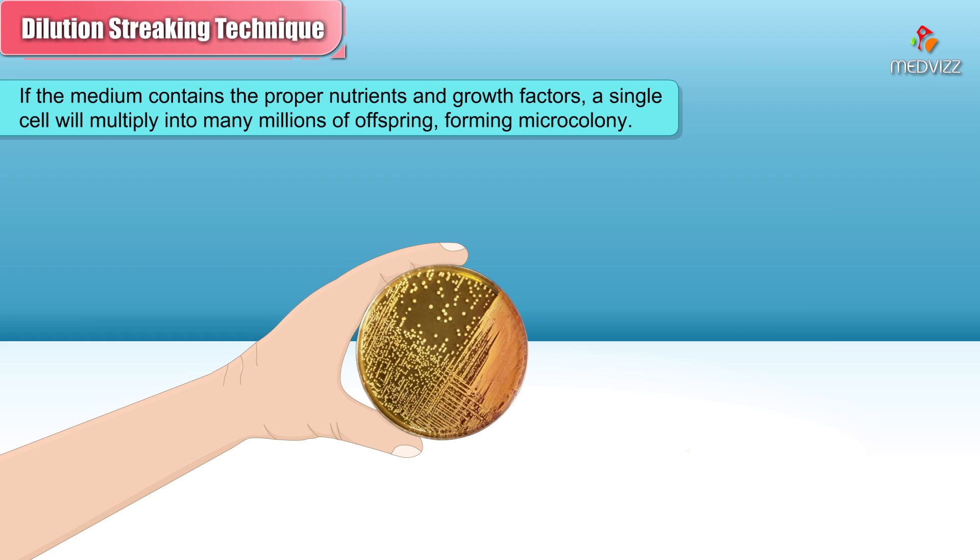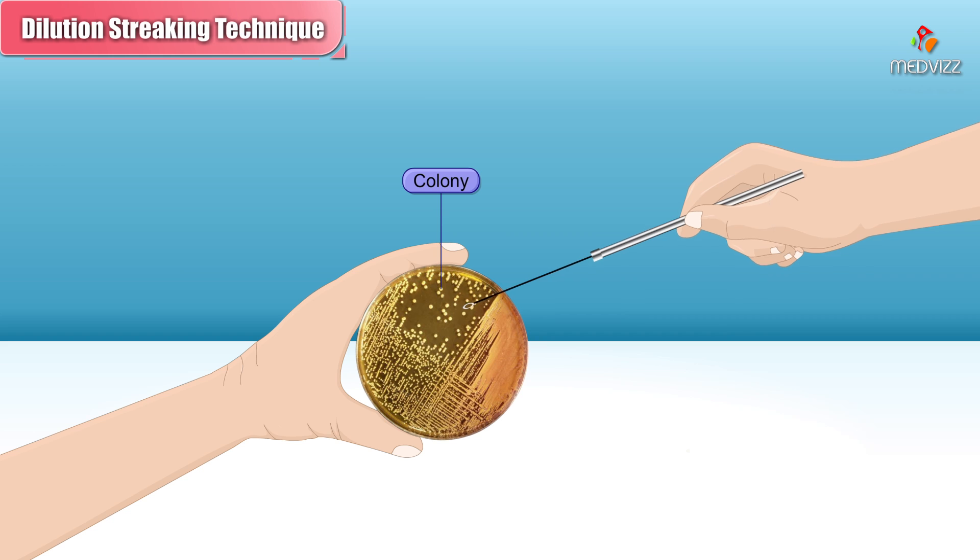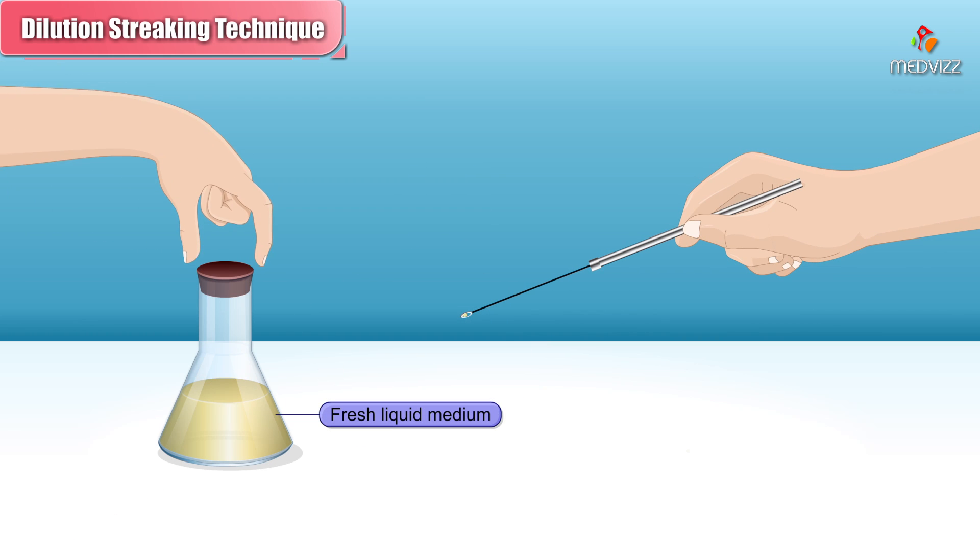If the medium contains the proper nutrients and growth factors, a single cell will multiply into many millions of offspring, forming a colony. In general, a pure culture can now be obtained by touching a single colony with a sterile loop and inserting that loop into fresh liquid medium.